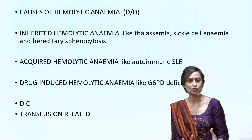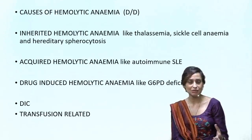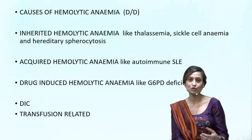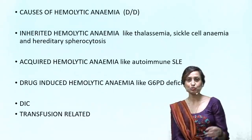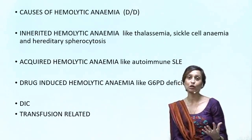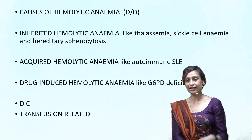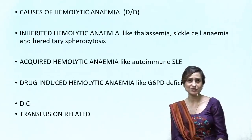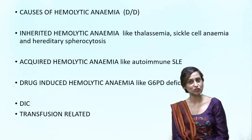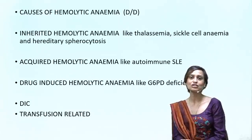Looking at the causes of hemolytic anemias broadly: we have inherited hemolytic anemias like thalassemias, sickle cell disease, and hereditary spherocytosis. There are acquired hemolytic anemias — usually immune-mediated, but also non-immune mediated, a typical example being SLE. Then there are drug-induced hemolytic anemias like G6PD, and other causes like DIC or transfusion-related hemolytic anemias.